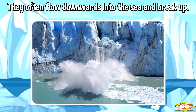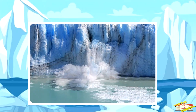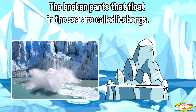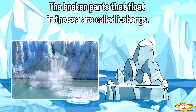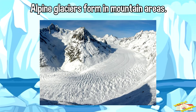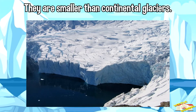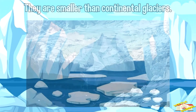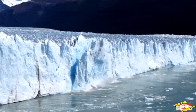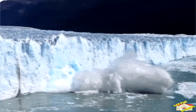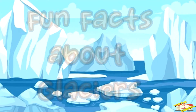Continental glaciers often flow downwards into the sea and break up. The broken parts that float in the sea are called icebergs. Alpine glaciers form in mountain areas. They are smaller than continental glaciers and usually flow until they reach a point where the temperature is warm enough.